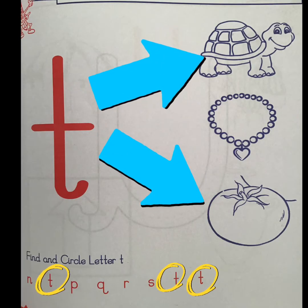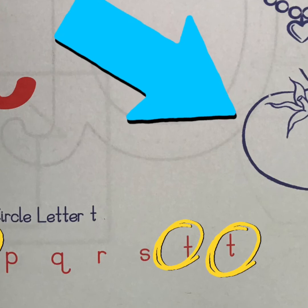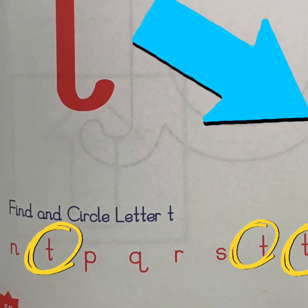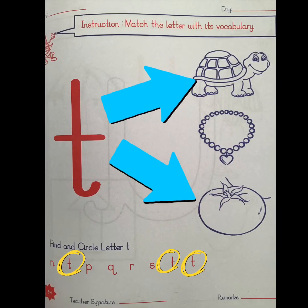Now our last activity is, as always, to match and find the letter t. T is for taro and T is for tomato. Then we are going to find and circle the letter t. Do you see the letter t? Good. Send me a picture once you're done.